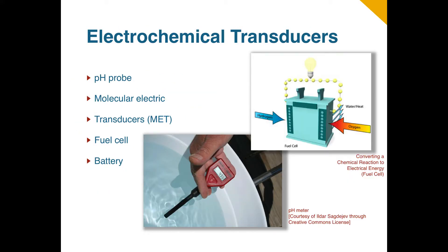Electrochemical transducers convert energy from a chemical reaction or a chemical change to electrical energy. Some common electrochemical transducers are the pH probe, molecular electric transducers, fuel cells, and batteries.